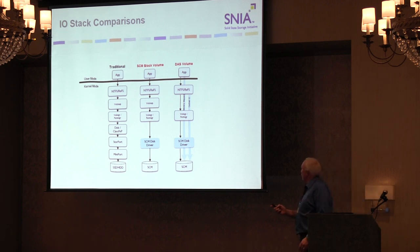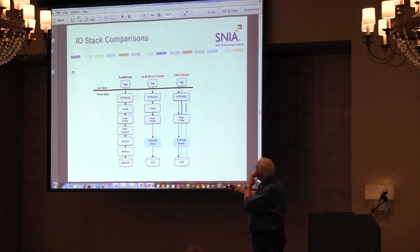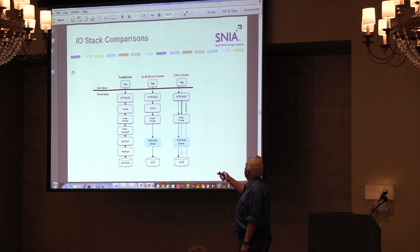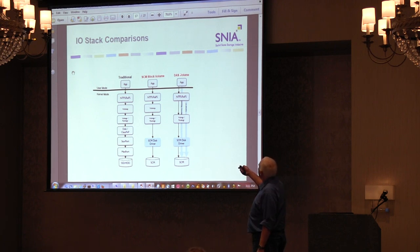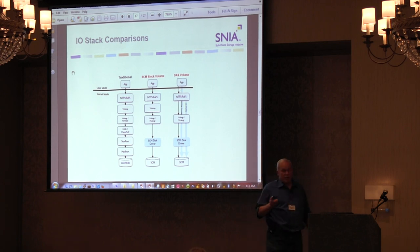This is an IO stack comparison. Inside a Windows system, a typical environment has many drivers — store port, class drivers, the volume manager, snapshotting, BitLocker, and more. In a storage class memory block mode volume, we've eliminated a lot of the lower stack components just to speed things up. In a direct access mode volume, the app can talk directly to the storage if it's memory mapped. For cached IO, it goes into the file system and the cache manager talks directly to storage, eliminating all the intermediate stack. For non-cached IO today, it comes down through the stack, and we are working to eliminate those software overheads.